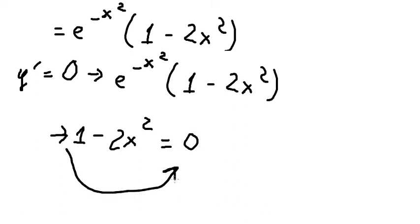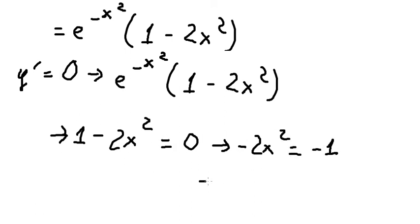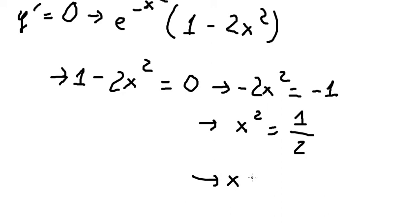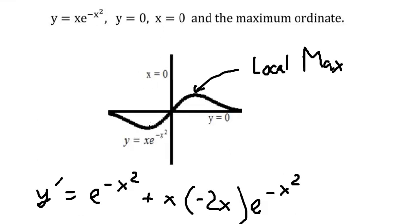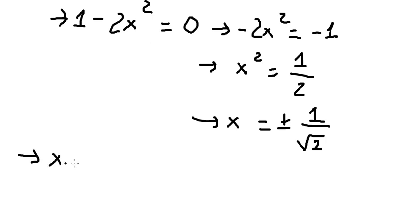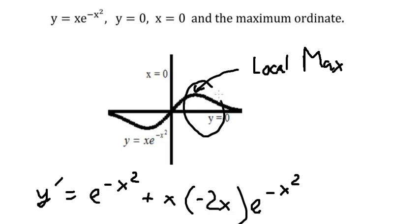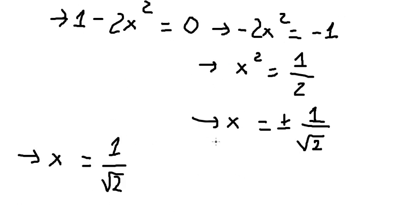Because we just have 1 minus 2x squared equals zero, we move the 1 to the right. Next we divide both sides by negative 2, giving us x squared equals 1 over 2. Taking the square root of both sides gives positive and negative 1 over the square root of 2. We choose x equals positive 1 over the square root of 2 because the local maximum is in the positive region.